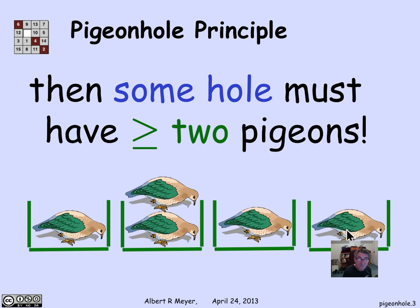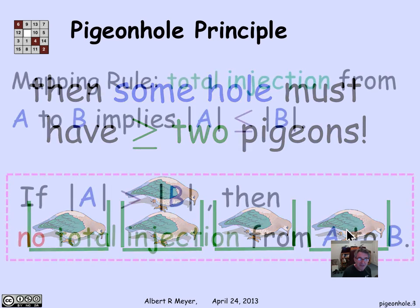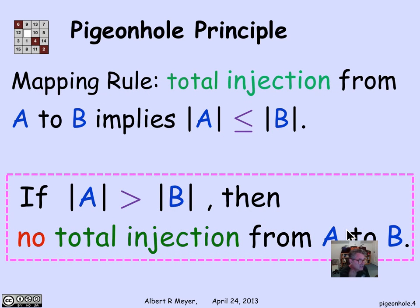We'll get some mileage out of that shortly. But let's remember that this is actually just an informal way of saying something that we've formally seen already. One of the mapping rules is that if you have a total injection from a set A to a set B, that implies that the size of A is less than or equal to the size of B.